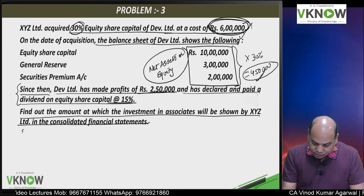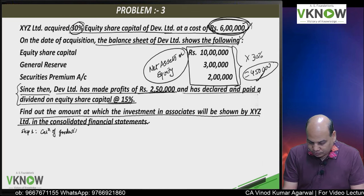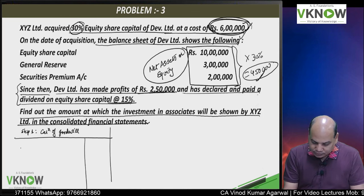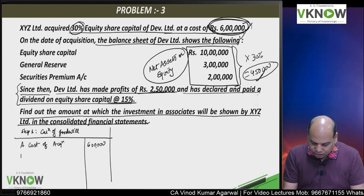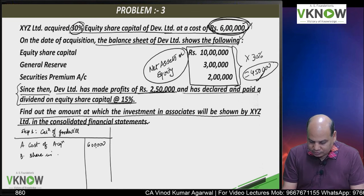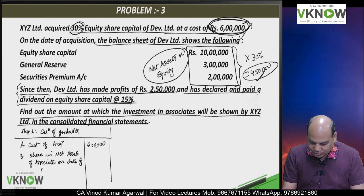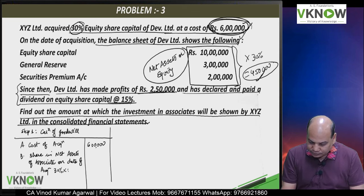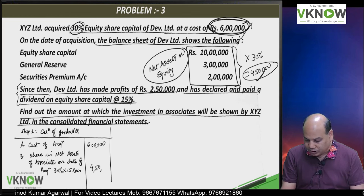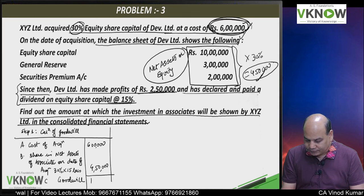The first step will be calculation of goodwill. Cost of acquisition is 6 lakh and share in net assets of associate on the date of acquisition is 30 percent of 15 lakhs — 4 lakh 50,000. So goodwill is 1 lakh 50,000.